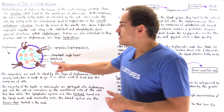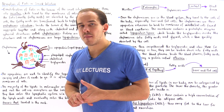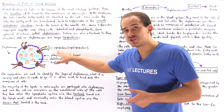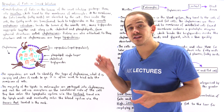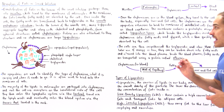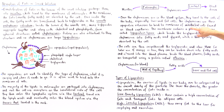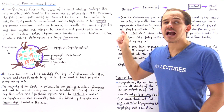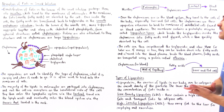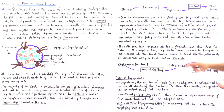These chylomicrons use their apoproteins to bind to special receptor proteins found on the membrane of endothelial cells that line the blood capillaries in our blood vessel system.